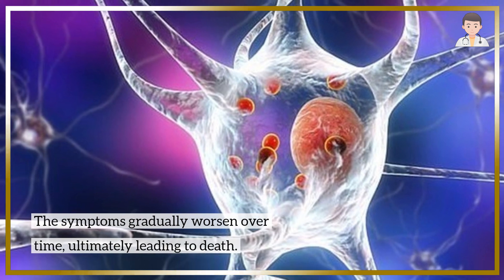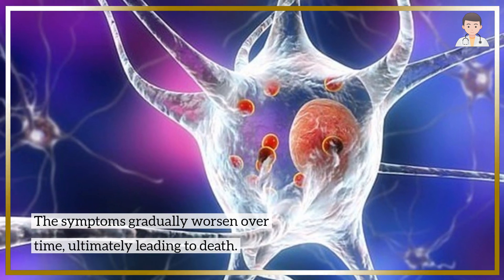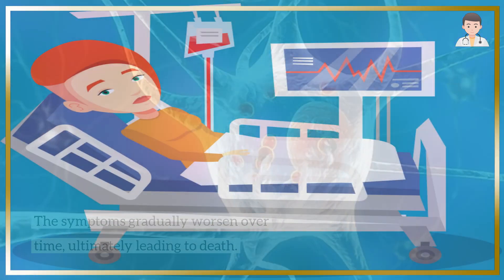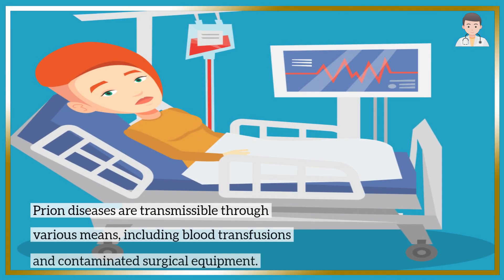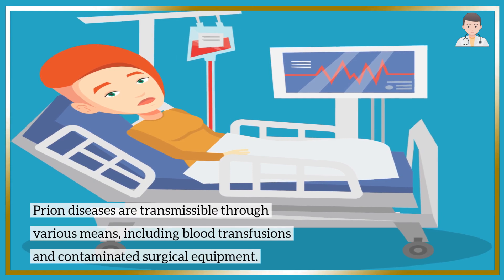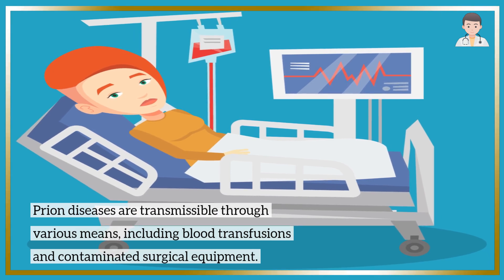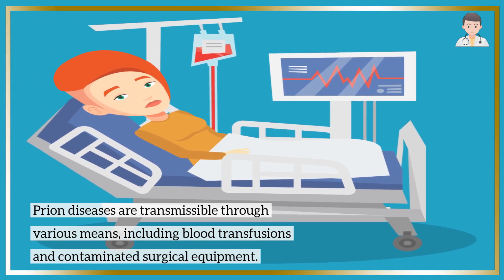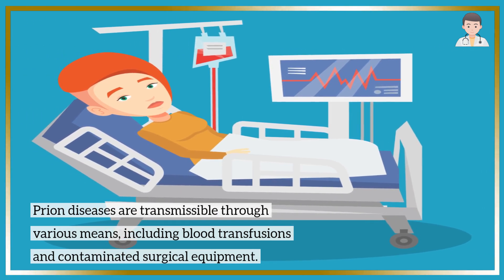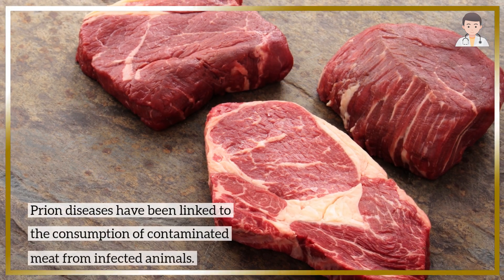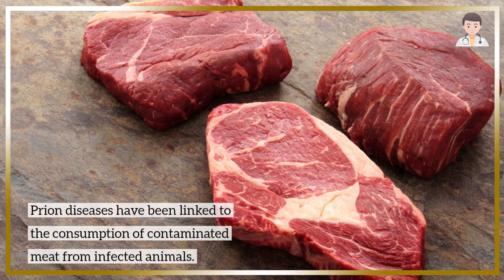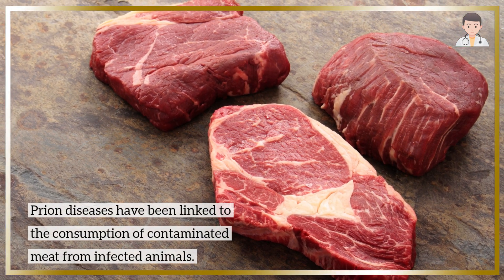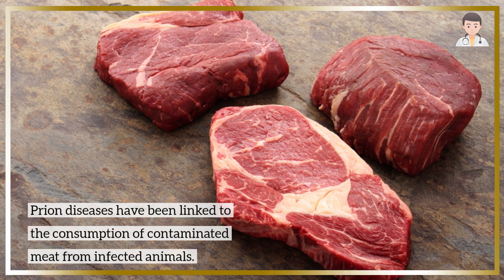The symptoms gradually worsen over time, ultimately leading to death. Prion diseases are transmissible through various means, including blood transfusions and contaminated surgical equipment, and have been linked to the consumption of contaminated meat from infected animals.